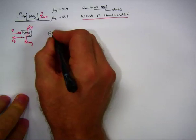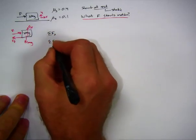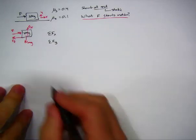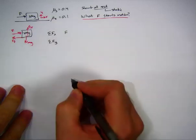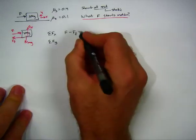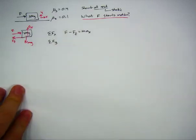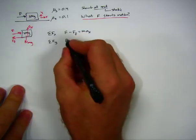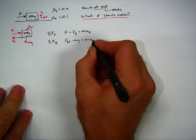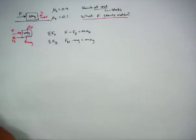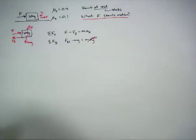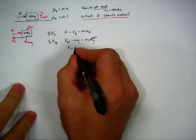Step three: write down the equations of motion — sum of forces in the X direction and sum of forces in the Y direction. In X, we have the applied force (positive) and the force of friction (negative), equaling mass times acceleration in X. In Y, the normal force (positive) minus Mg (negative) equals mass times acceleration in Y. Since nothing is going on in Y, that equals zero.